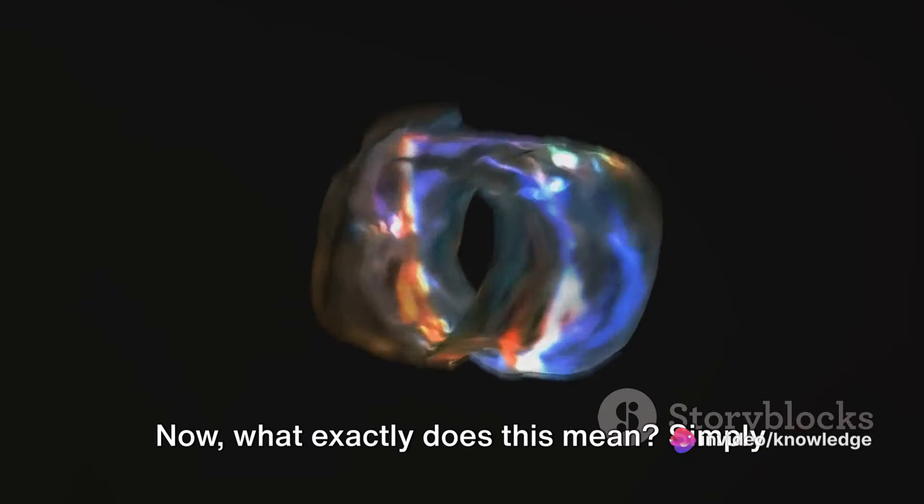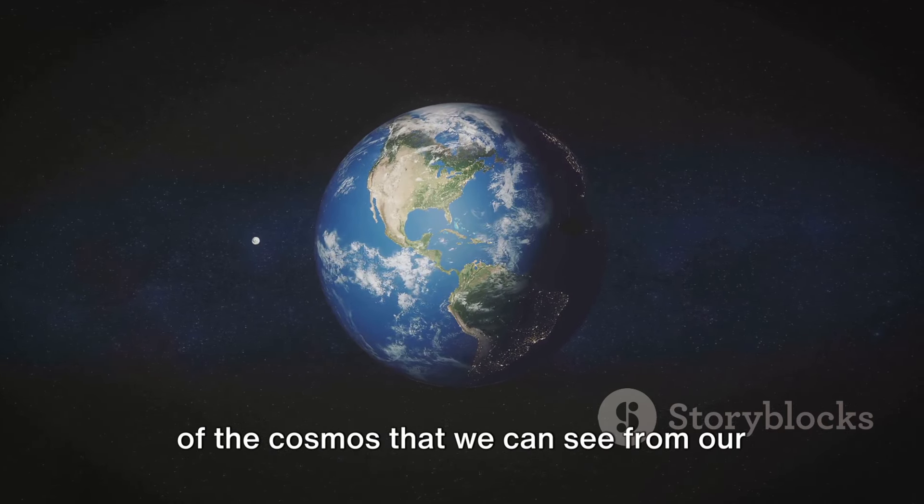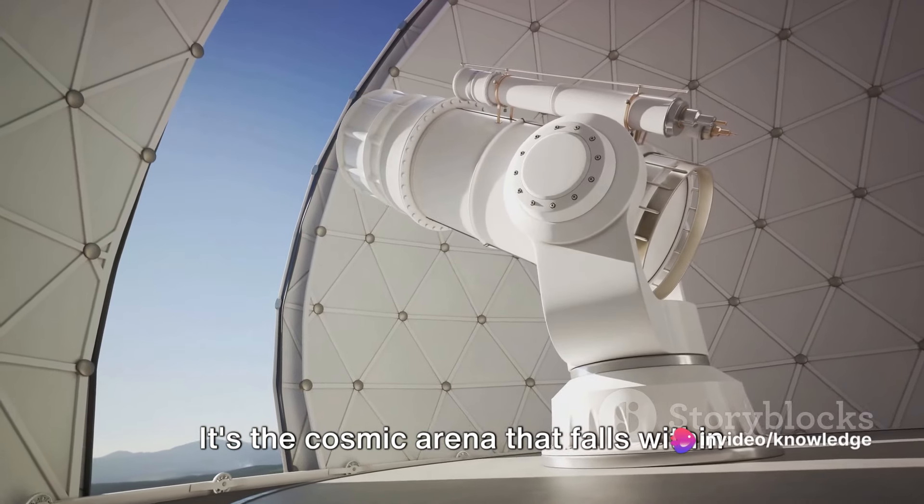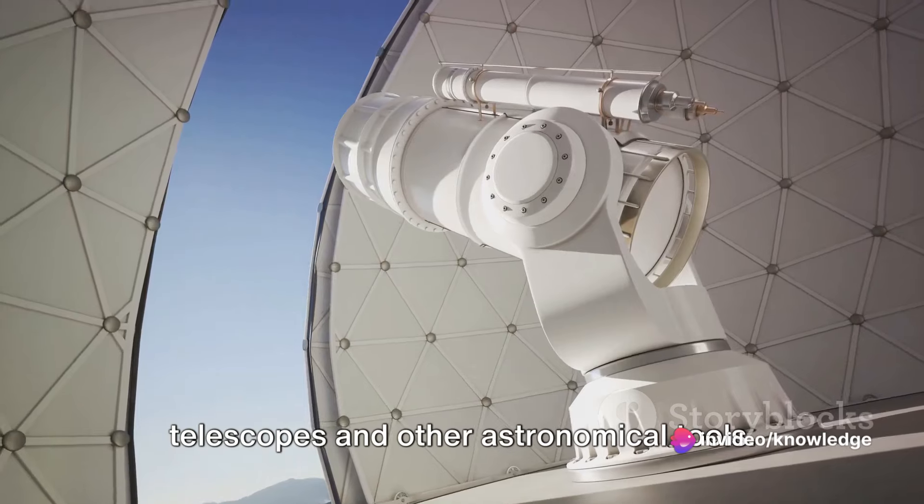Now what exactly does this mean? Simply put, the observable universe is the part of the cosmos that we can see from our home planet, Earth. It's the cosmic arena that falls within our line of sight and is accessible to our telescopes and other astronomical tools.